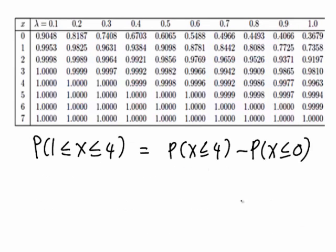So I've just rewritten that here below the table for convenience. In both cases we're looking at lambda equals one, but the probability of X less than or equal to four in our CDF table is 0.9963.